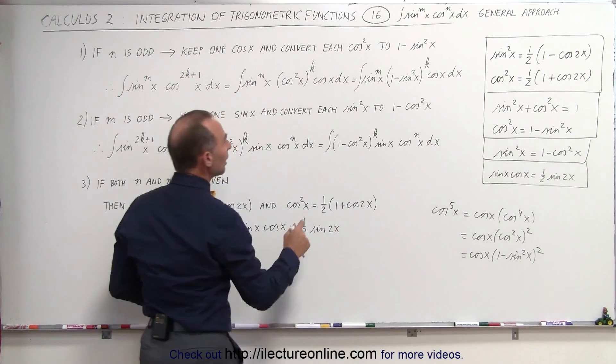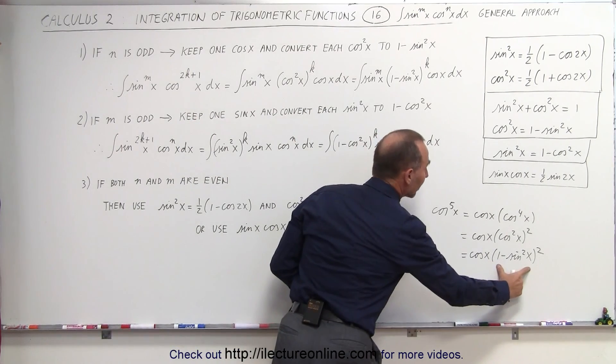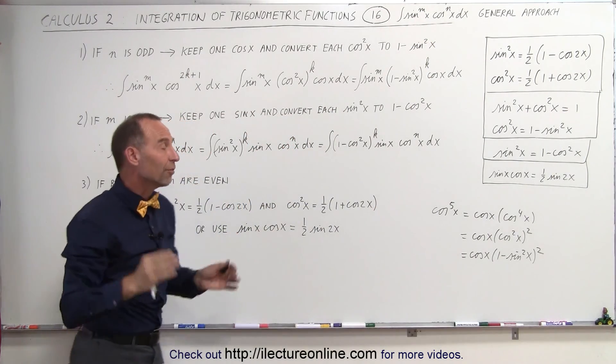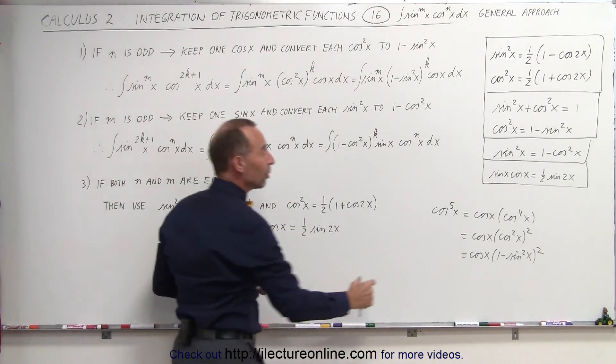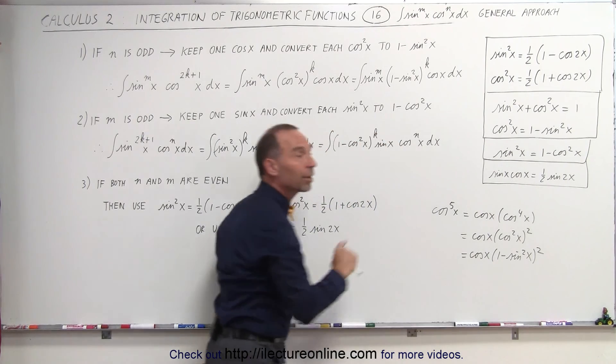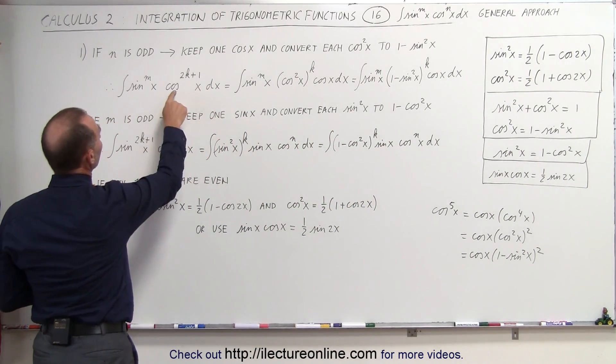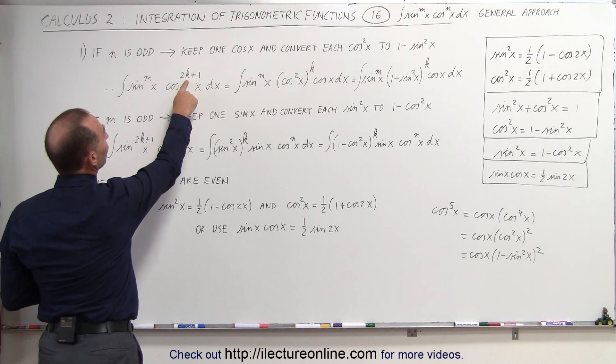And then if you do that, you then multiply whatever comes out of here times the sin to the m power of x, and then you have all sines of x, at various powers, multiplied times the cosine of x, and that becomes your differential.